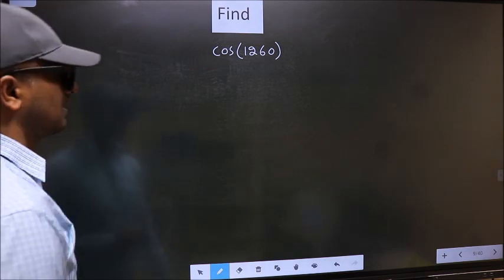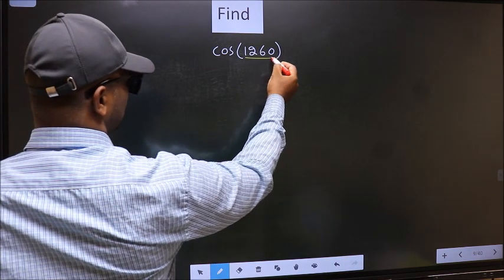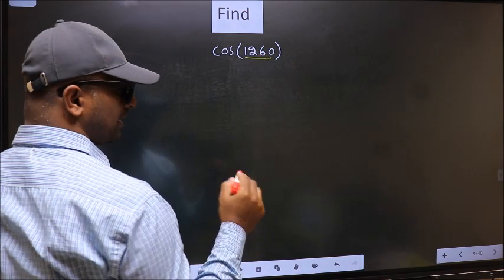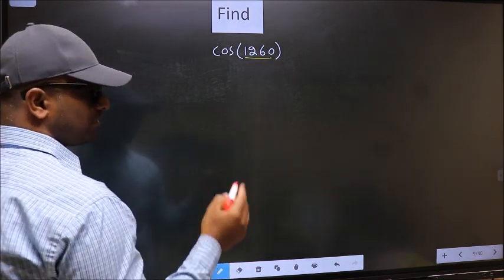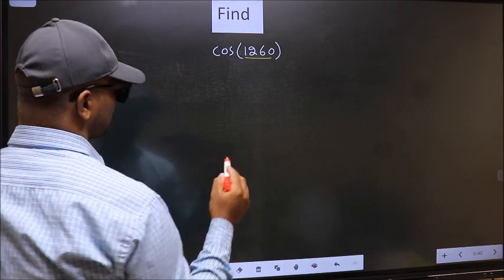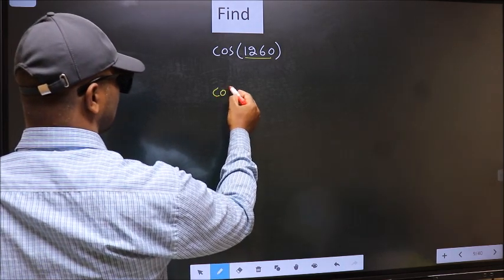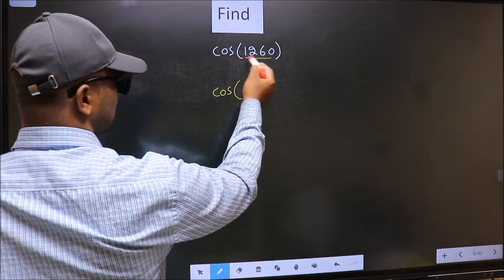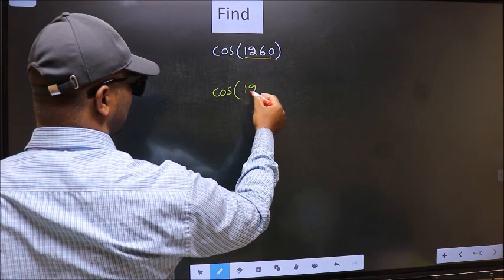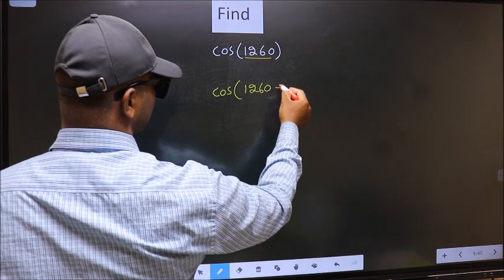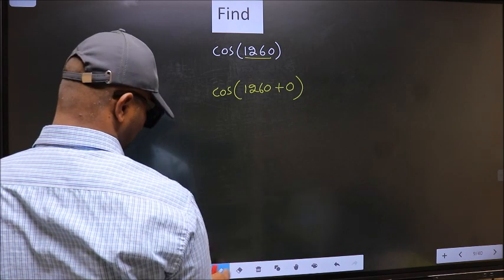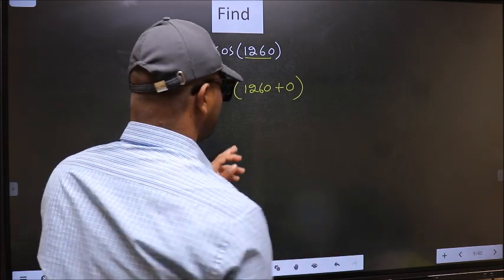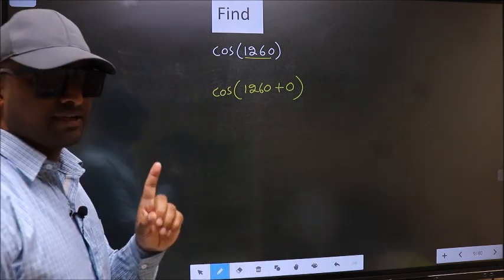See, here we have 1260, and 1260 is a multiple of 180. So what we should do is, for cos of this, we should write 1260 plus 0. This is your step 1.